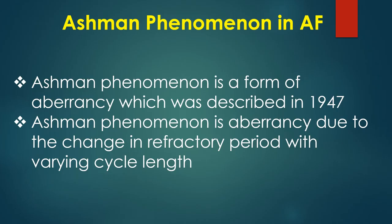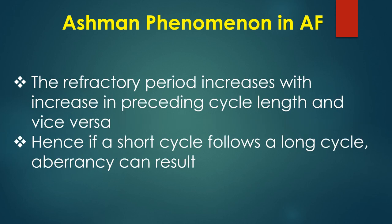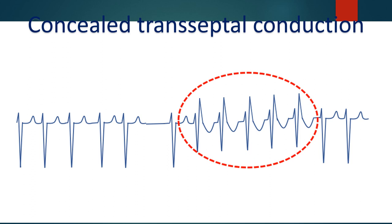Ashman phenomenon is a form of aberrancy described in 1947. It is aberrancy due to the change in refractory period with varying cycle length — the refractory period increases with increase in preceding cycle length and vice versa. Hence, if a short cycle follows a long cycle, aberrancy can result. The aberrancy is usually of right bundle branch type because the refractory period of the right bundle is longer than that of the left bundle branch.